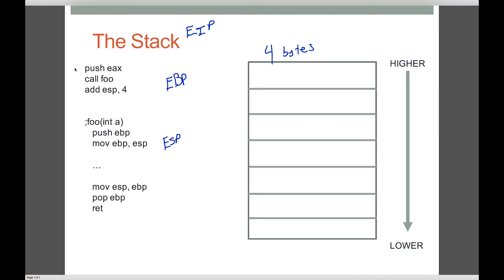Let's say we start here. EBP is pointing off somewhere — we don't really care yet. ESP is pointing up here as the top of our stack. We push EAX, putting that value onto the stack, so ESP is now pointing one level down. Next comes the call to foo. The call instruction pushes the return address onto the stack, so ESP moves down again and the return address is now on top of the stack.